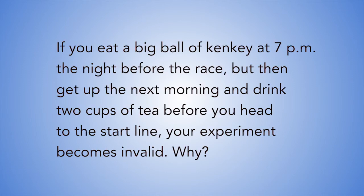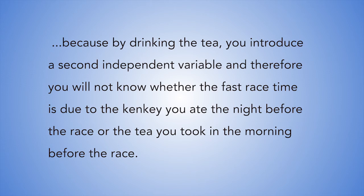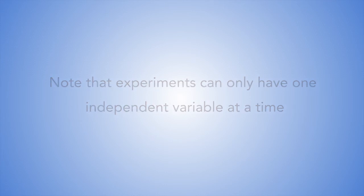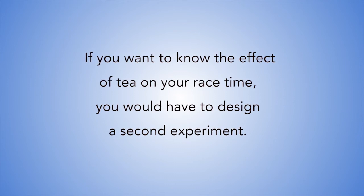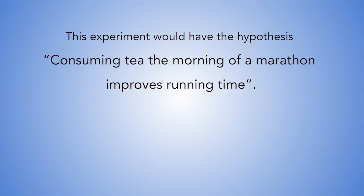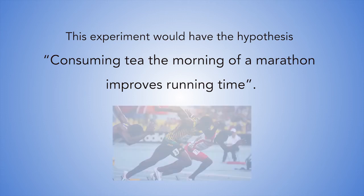If you eat a big bowl of kinky at 7pm the night before the race, but then get up the next morning and drink two cups of tea before you head to the starting line, your experiment becomes invalid. This is because by drinking tea, you introduce a second independent variable, and therefore you will not know whether the race time is due to the kinky you ate the night before or the tea you took in the morning. Note that experiments can only have one independent variable at a time. If you want to know the effect of tea on your race time, you would have to design a second experiment with the hypothesis: consuming tea the morning of a marathon improves running time.